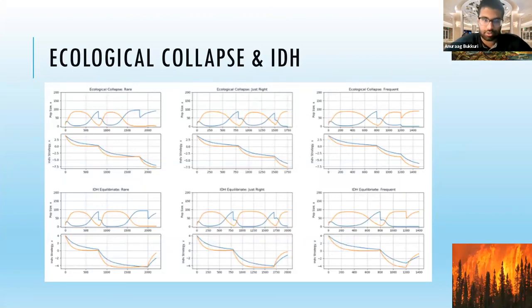We can apply this IDH concept to two situations. The first in the first row is what's called ecological collapse: permanent disturbances from which the population cannot recover, like asteroid impacts, abrupt climate change, large volcanic eruptions. The second row depicts disturbances from which the population can recover over time, like cancer treatment, like forest fires.